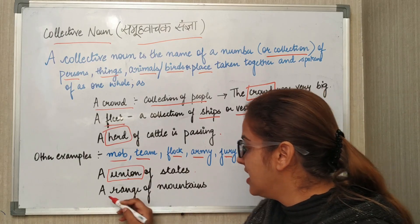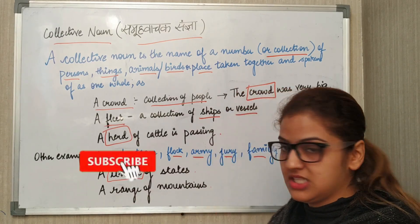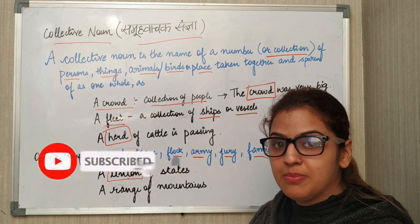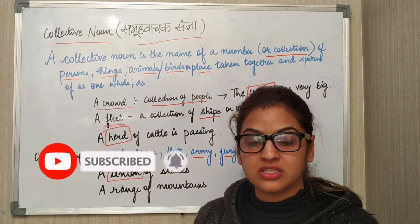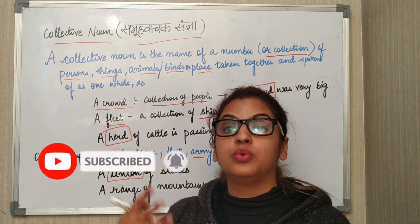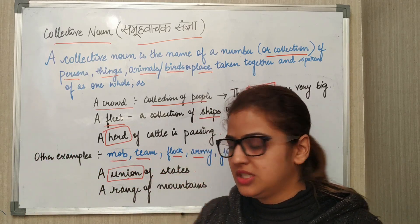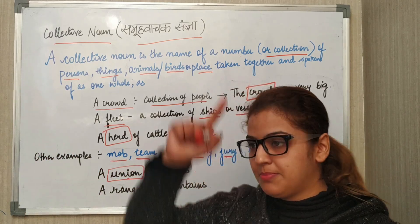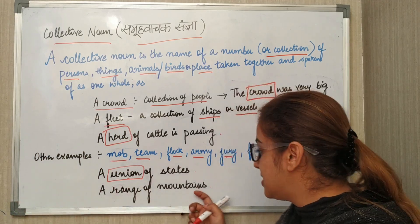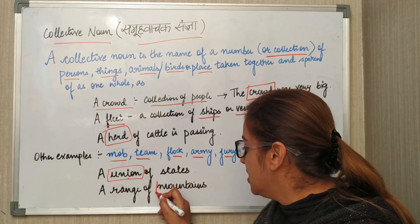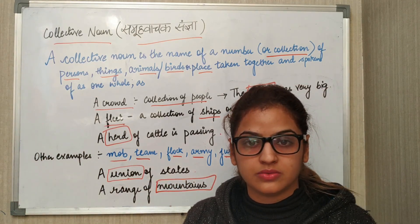Next is a range of mountains. We don't say a single mountain because we are having lots of mountains. We don't have just one mountain, so we always say mountains. Mountain here is a collective noun.